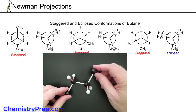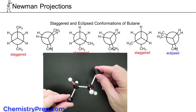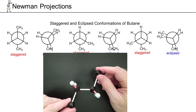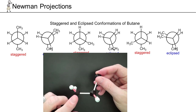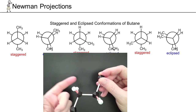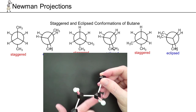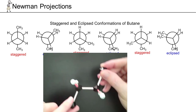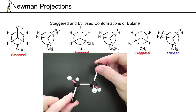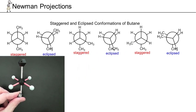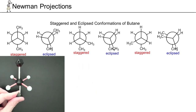To understand Newman projections, it's highly recommended to build a physical model. Rather than looking at a normal perspective, where hydrogens are shown as wedges coming out at you and dashes going away, we're going to turn the molecule 90 degrees to get the perspective we look at when we examine a Newman projection.